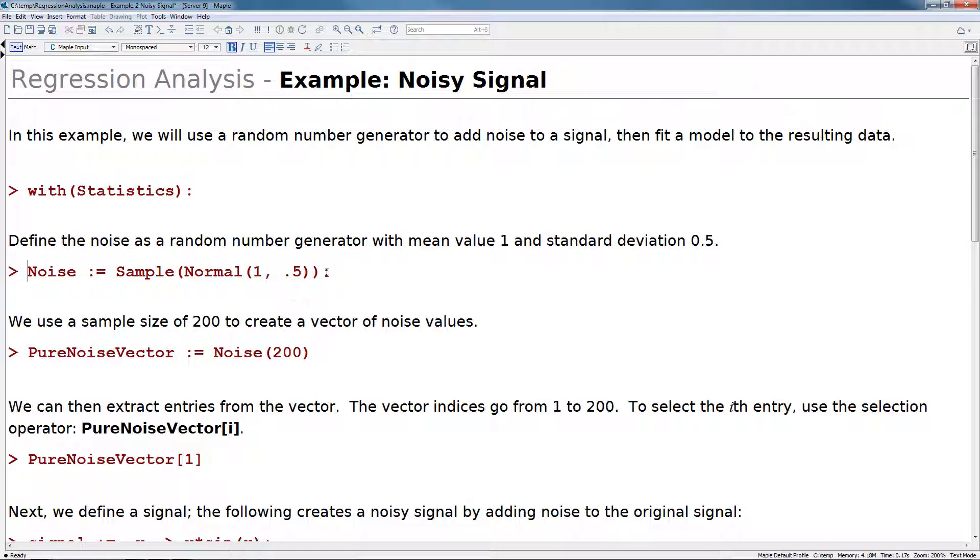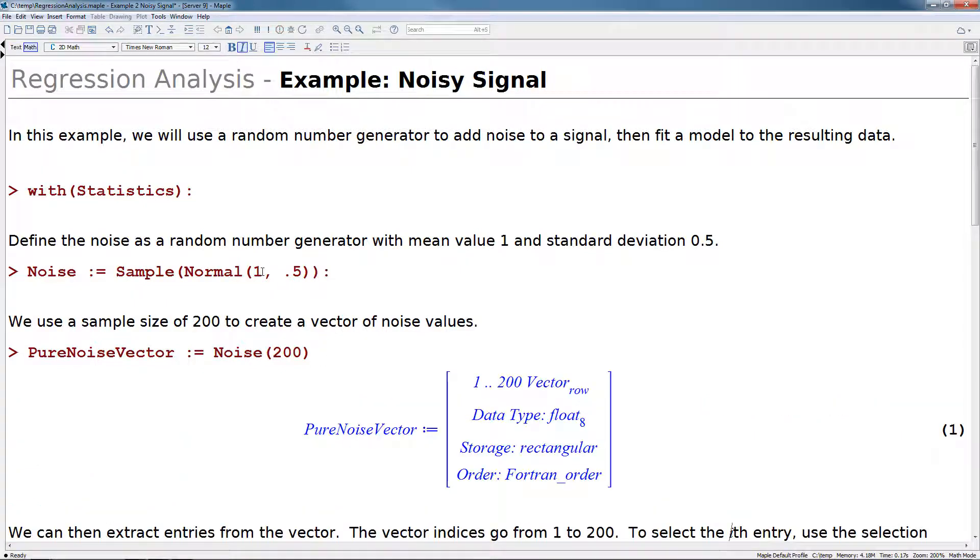We also make the assumption that the data is normally distributed. So we say here, noise is assigned to sampling from a normal distribution with mean 1 and standard deviation 0.5. We can use a sample size of 200 to create a vector of noise values. So we'll do a pure noise vector here assigned to 200 values taken from noise.